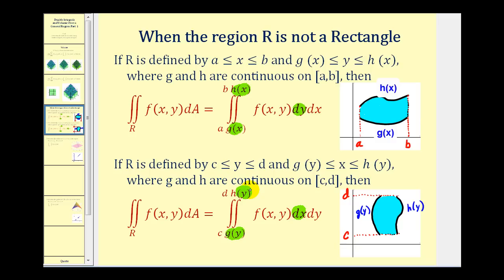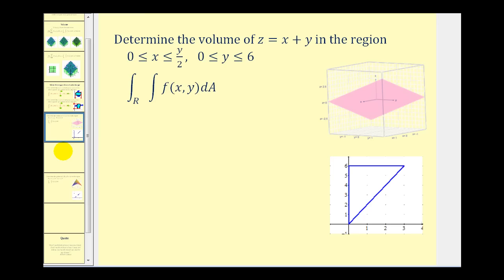Let's go ahead and take a look at our examples. We want to determine the volume under the plane z equals x plus y, and our region of integration is defined where x is in the closed interval from zero to y over two, and y is in the closed interval from zero to six. It's important for these types of problems that we graph our region of integration.